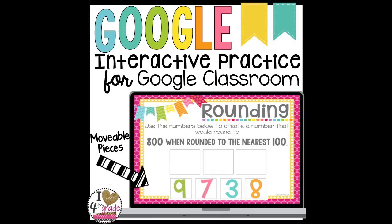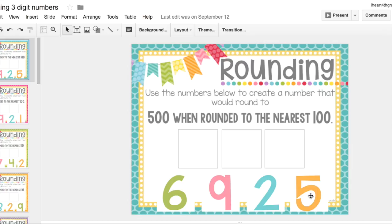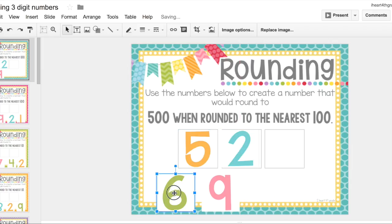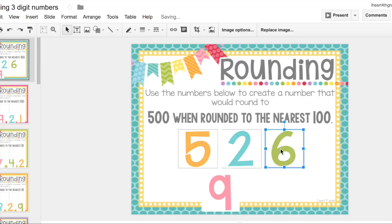Let's take a look at what the student sees when you share this resource with them. The great thing about this resource is it provides opportunity to have conversations with your students about place value. Here you can see the students have four digits that they have to manipulate to create a number that rounds to 500 when rounded to the nearest 100.